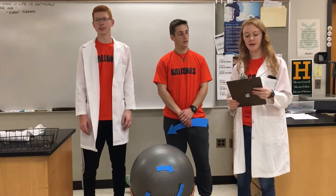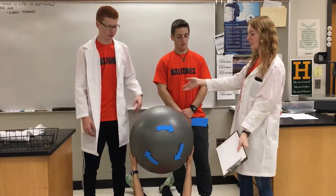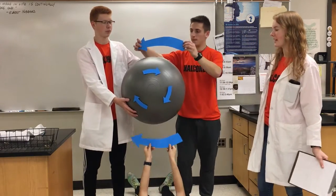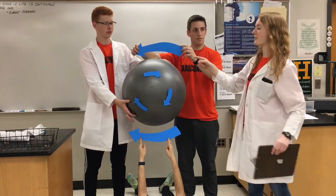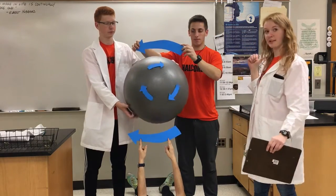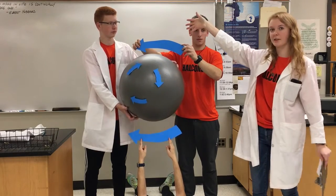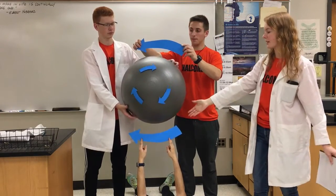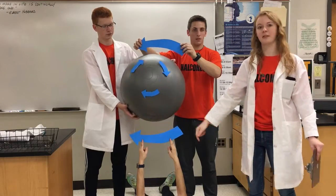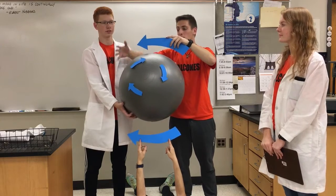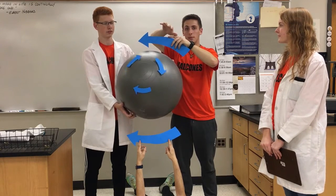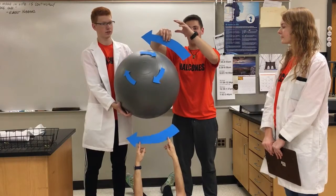We'll now break down this principle and how it impacts the flight of the ball, using this yoga ball for a large scale demonstration. Here we have the wind, notated by these two arrows, moving in this direction, and the ball is spinning in this direction and moving this way. There is a high pressure area created above the ball and a low pressure area created under the ball, and thus there is a downward force on the ball. The reason that a high pressure zone is created is because the friction of the air on the ball draws the air to the top of the ball, and the air wants to move from high pressure to low pressure, thus pushing the ball down.